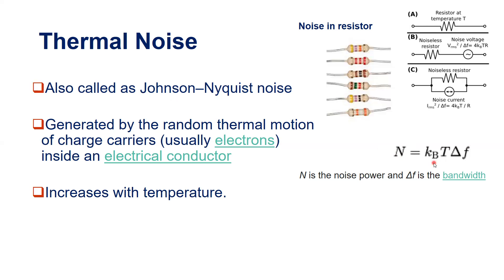This noise is also called Johnson noise or Nyquist noise. The power of the noise N is proportional to the Boltzmann constant k_B, the temperature T, and the bandwidth Δf. In a given bandwidth, the noise power in a piece of electrical conductor will increase as temperature increases, while k_B remains constant.